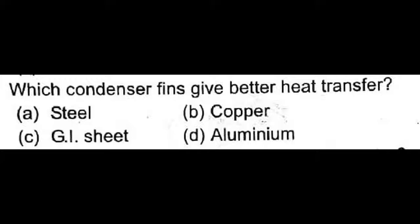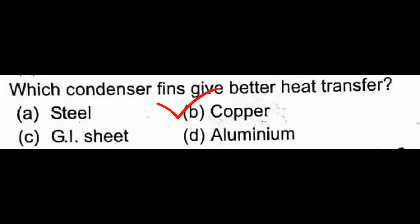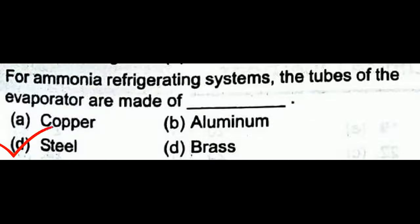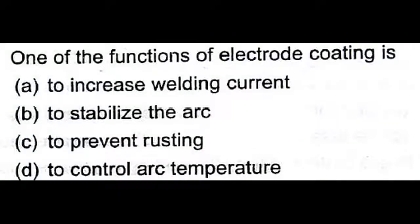Which condenser fins give better heat transfer? It is copper — copper gives the best heat transfer and is used as fins. For an ammonia refrigeration system, the tubes of the evaporator are made of steel. For ammonia systems, steel tubes are used.